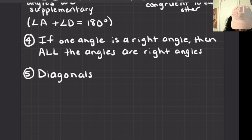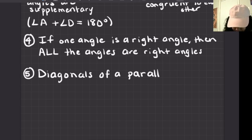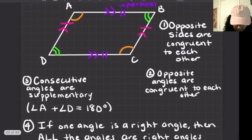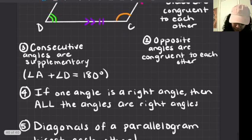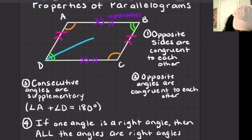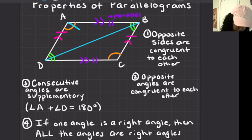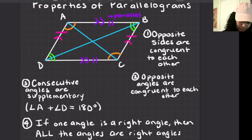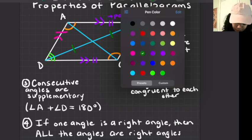Property number five: the diagonals of a parallelogram bisect each other. A diagonal is a segment connecting opposite vertices of your parallelogram — B connected to D, and A connected to C. In a parallelogram, the diagonals bisect each other, meaning diagonal AC cuts BD in half into two equal pieces.